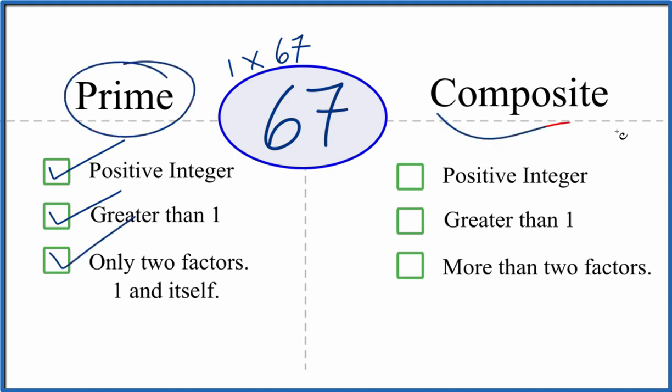But what about a composite number? Is 67 a composite number? Because it's a positive integer, it's greater than one. But are there more than two factors?